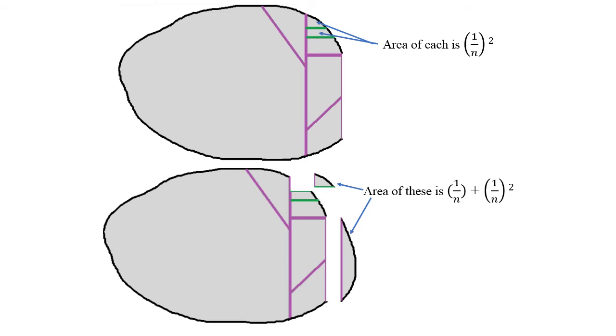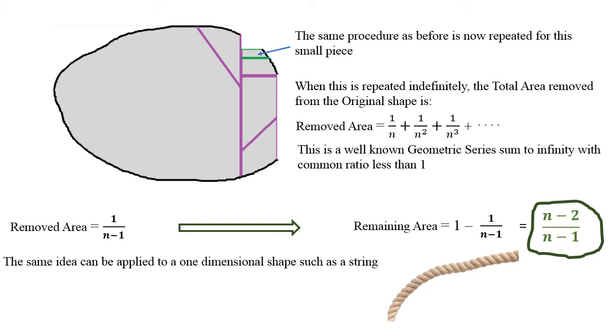The same procedure as before is repeated for this small piece. You continue this process indefinitely and remove each time the area. The total area removed will be 1 over n plus 1 over n squared, 1 over n cubed. This is a well-known geometric series.